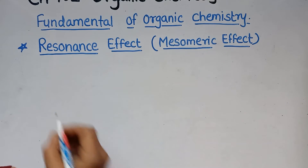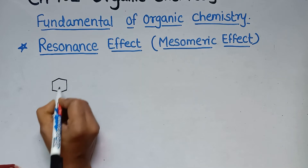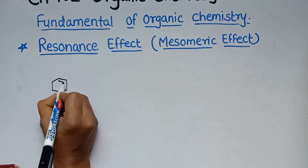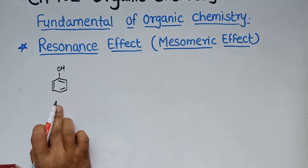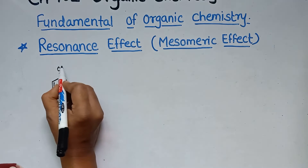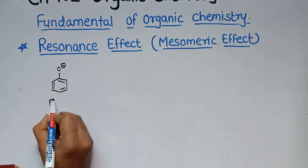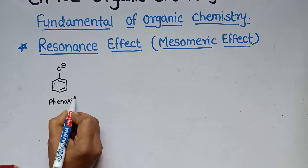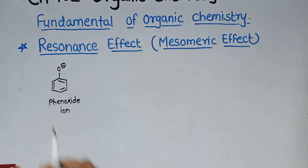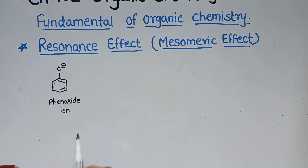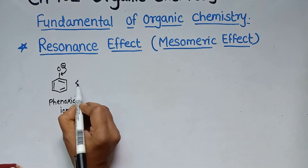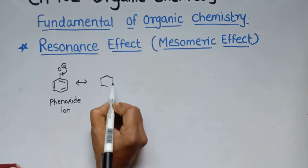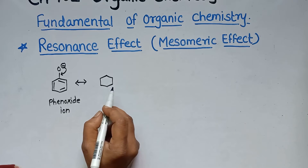The second example is the phenoxide ion, formed by removing one hydrogen from phenol, leaving a negative charge. We write the resonating structures (also called canonical structures) of phenoxide ion: the negative charge on oxygen shifts into the ring through electron delocalization.